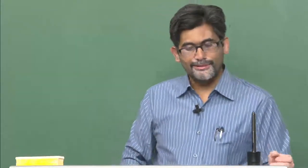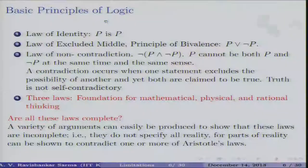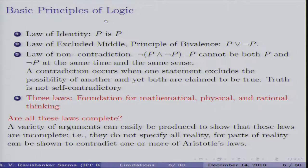The basic principles of classical logic are: the law of identity — P is P; the law of excluded middle — either P is the case or not P is the case; and the law of non-contradiction — it is not the case that something is simultaneously true and false. A contradiction occurs when one statement excludes the possibility of another, yet both are claimed to be true. Truth is not considered self-contradictory.